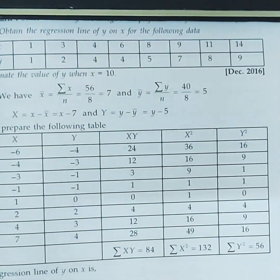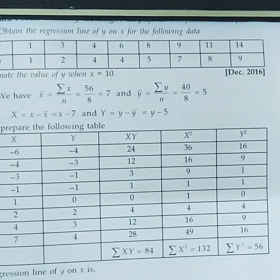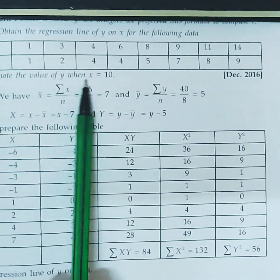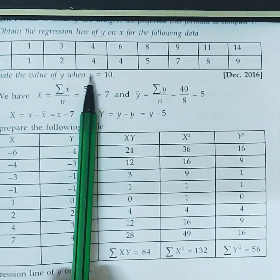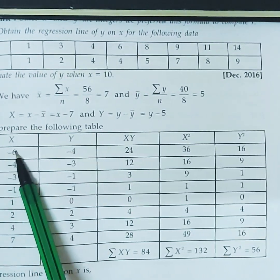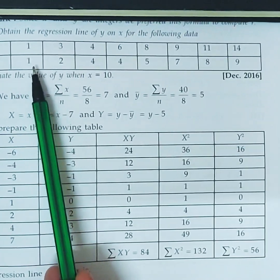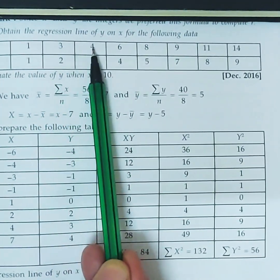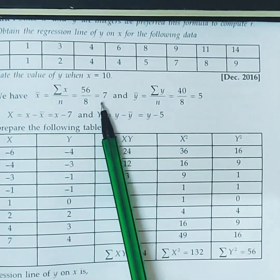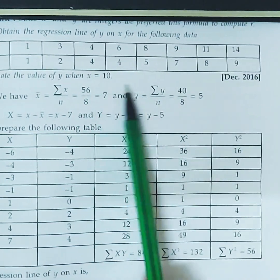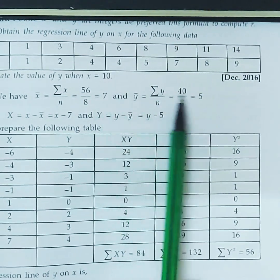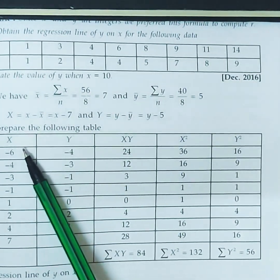Now a new question: obtain the regression line of y on x for the following data, and estimate y when x = 10. x and y values are given. Using the same tabular column approach: add all x values (1+3+4+6+8+9+11+14) divided by 8 to get x̄ = 7. Add all y values divided by 8 to get ȳ = 5.